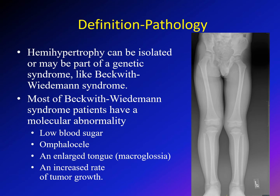Hemihypertrophy can be an isolated condition — in this case it's called isolated hemihypertrophy or isolated hemihyperplasia — or it can be part of a genetic syndrome like Beckwith-Wiedemann syndrome. Most cases of Beckwith-Wiedemann syndrome have genetic abnormalities and are associated with low blood sugar, omphalocele, enlarged tongue (macroglossia), and increased risk of tumor growth.